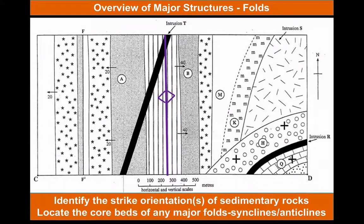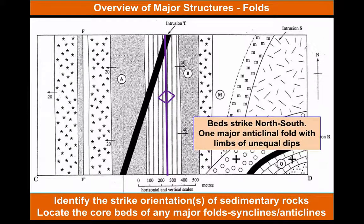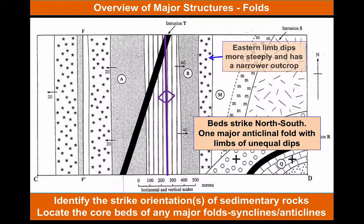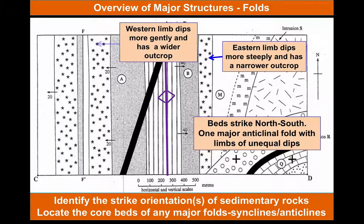This particular map has a fold axial plane marked. We can see it's an anticline — we have the oldest bed in the middle and dips of beds going away from the axial plane. Notice though the dips are unequal. This eastern limb has a steeper dip of 40 degrees, so therefore the outcrop width of the beds on the eastern limb is narrower than those on the western limb, where the dip is only half as much.